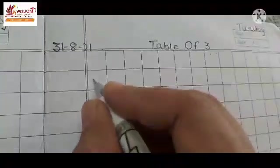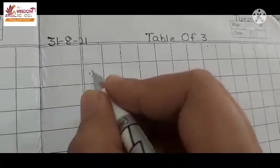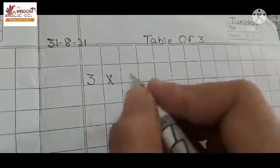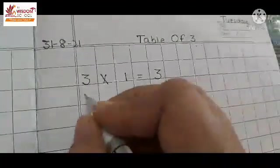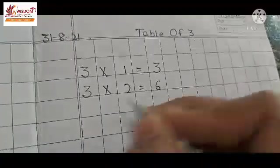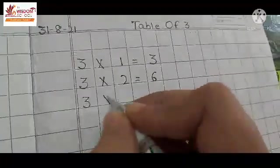Let's start writing with me. 3 times 1 is 3. 3 times 2 is 6. 3 times 3 is 9.